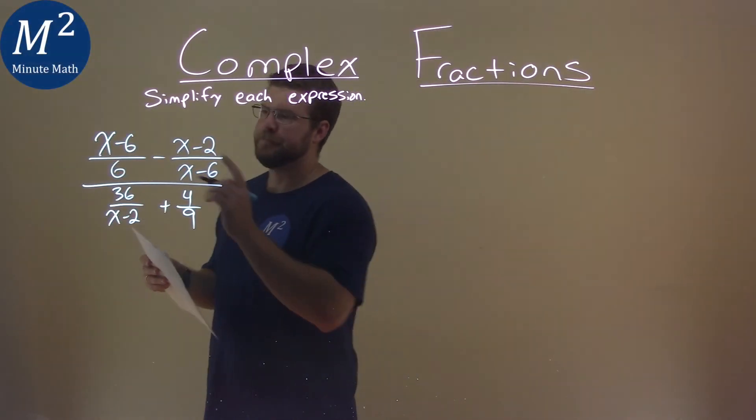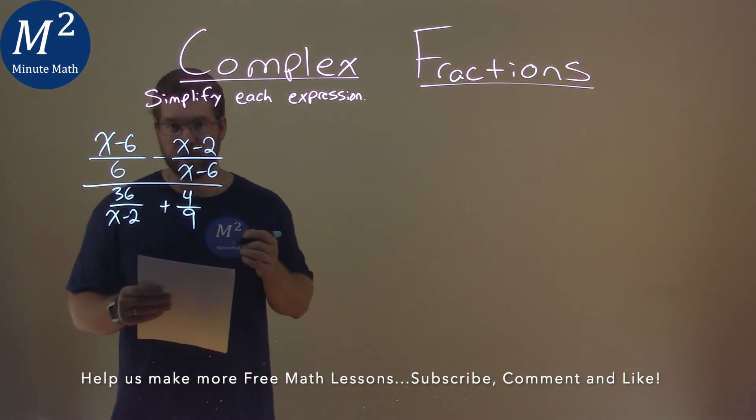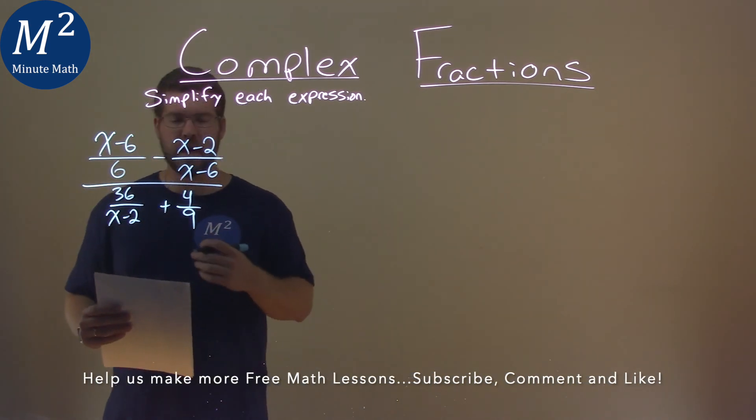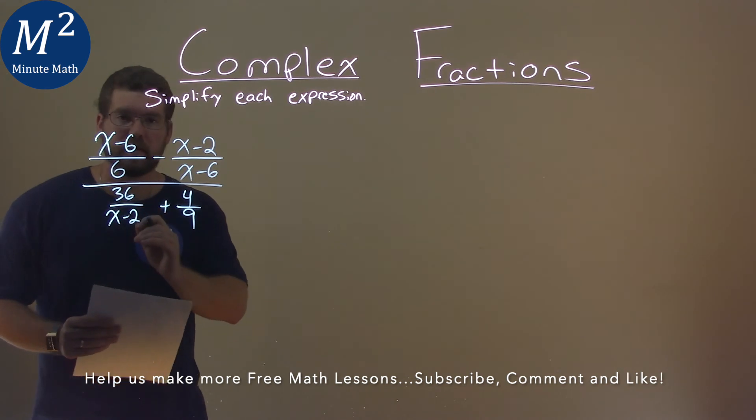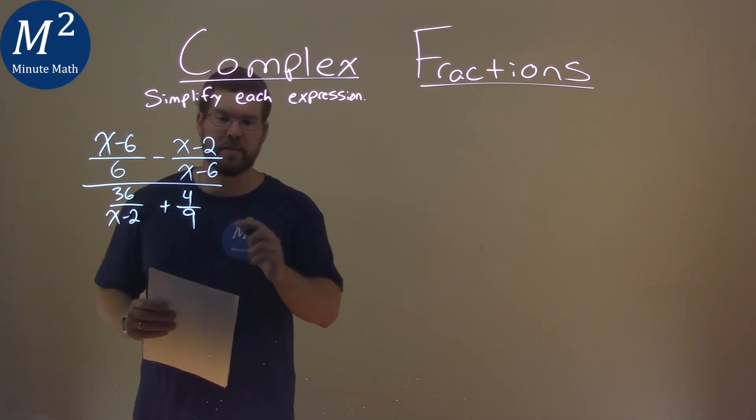We're given this problem right here. x minus 6 over 6 minus x minus 2 over x minus 6. All of that is over top of 36 over x minus 2 plus 4 over 9. And we've got to simplify this.